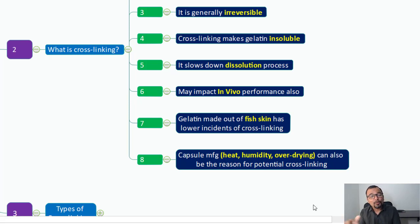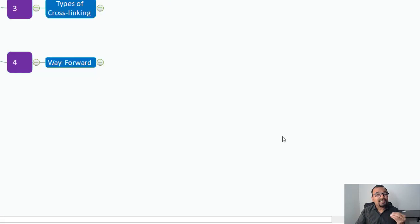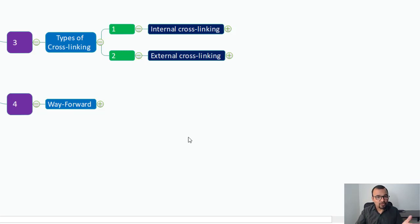The third important point is what are the types of cross-linking, and there are two different types. One is internal cross-linking and the second one is external cross-linking. Internal cross-linking means intra-molecules. Gelatin molecules itself come together and form the cross-linking, that is known as inter-cross-linking.